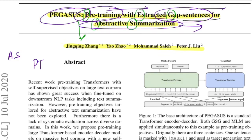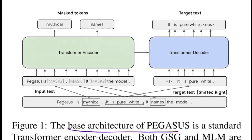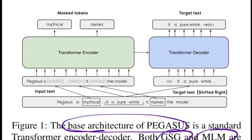Talking about gap sentences — this is one of the objectives the authors proposed as a self-supervised objective for their model. Looking at the base architecture diagram, the model is trained against two objectives: gap sentences and masked language modeling. However, the final version of the model is trained only on GSG, which gives slightly better performance compared to training on both objectives.